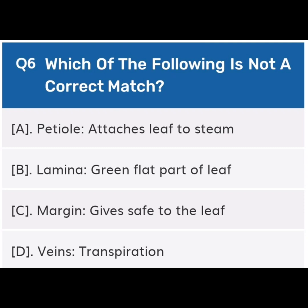Next, question number six: Which of the following is not a correct match? Option A: Petiole — attaches leaf to stem. Option B: Lamina — green flat part of leaf. Option C: Margin — gives shape to the leaf. Option D: Veins — transpiration.